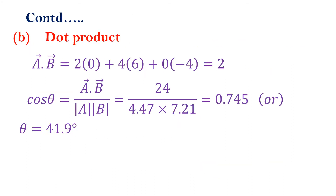Now we are going to use the dot product method. First, find A dot B: 2 times 0, plus 4 times 6, and 0 times minus 4. The answer is 24.